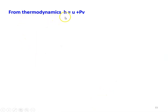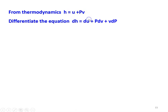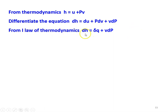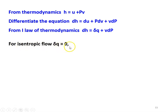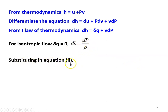From thermodynamics, H equals U plus PV. Differentiating: dH equals dU plus P·dV plus V·dP. From the first law of thermodynamics, dH equals δQ plus V·dP, because dU plus P·dV equals δQ. For isentropic flow, there is no heat transfer, so δQ equals zero, and dH becomes dP/rho, since specific volume V equals 1/rho. Substituting into equation two, we get dC equals minus dP divided by rho·C. This is equation number three.